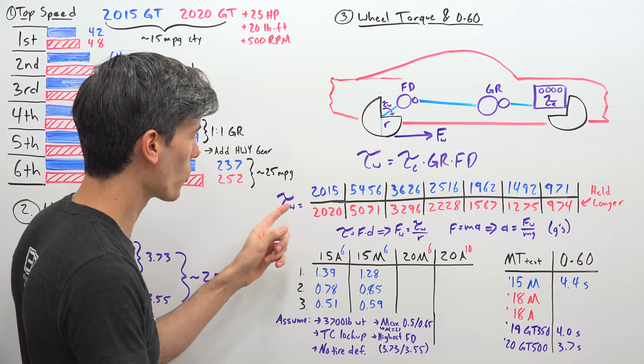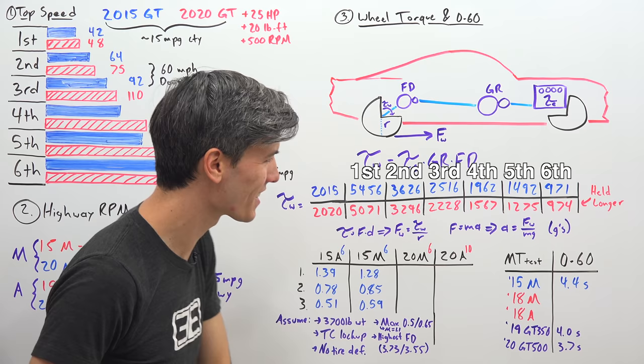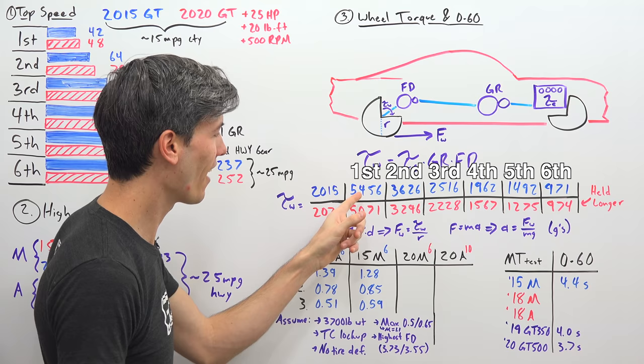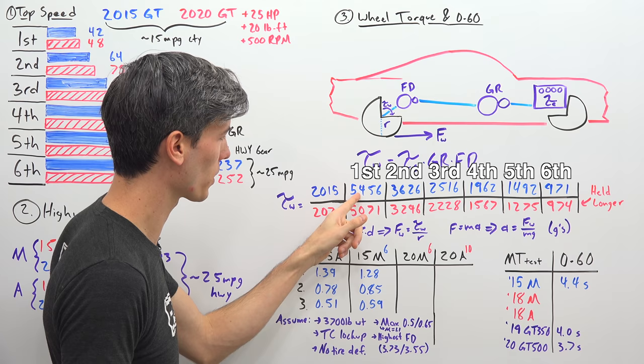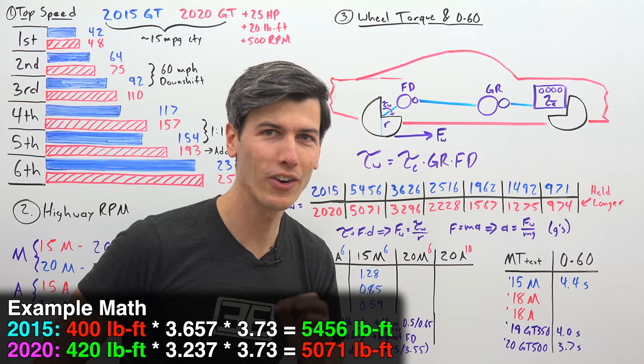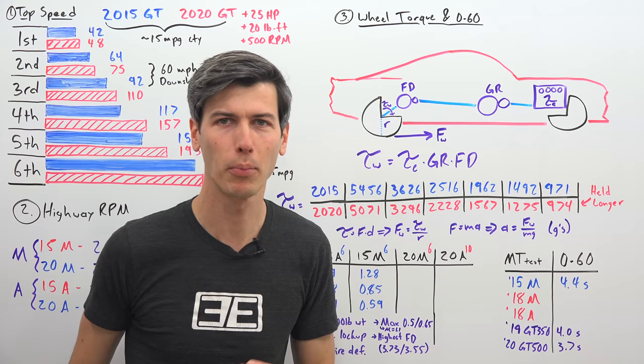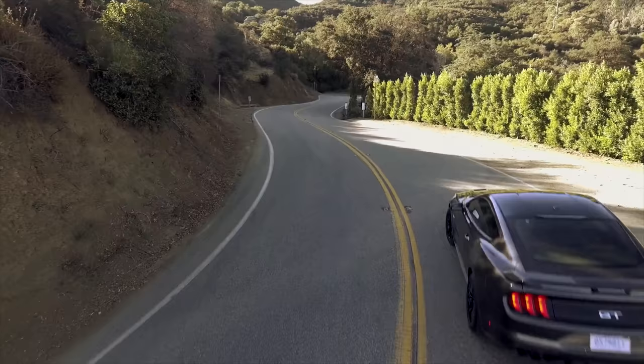And so if you look through each of the different gears. First, second, third, fourth, fifth, sixth. You can see that in every single gear. Except for sixth which who cares what your wheel torque is in sixth gear. You're just trying to get fuel economy at that point. In every single gear the 2015 has more wheel torque. So this is wheel torque and pound feet. 5,456 pound feet versus 5,071. A significant difference there. And so look at each of these. The previous generation even though it has less torque. Has more wheel torque in every single gear. Except for sixth by 3 pound feet. And I think that's super disappointing. You got the latest and greatest. And you're actually going to experience less acceleration.